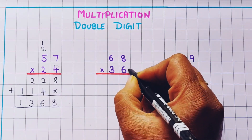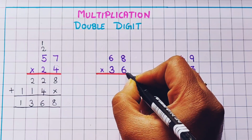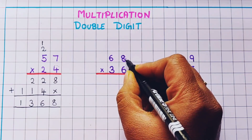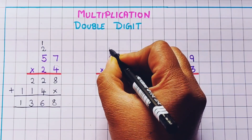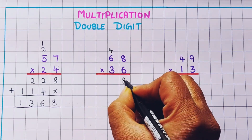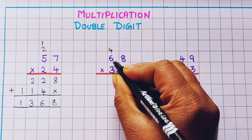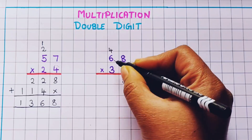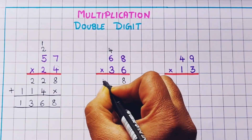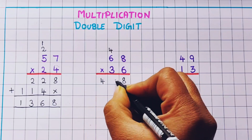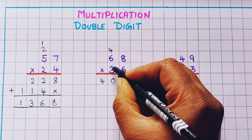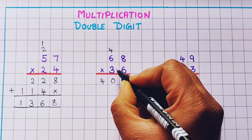Now let's do the next problem: 68 into 36. First we are going to do the multiplication using 6. 6 eights are 48, so here I'm going to write 4 and here 8. Now I'll do the multiplication with 3.